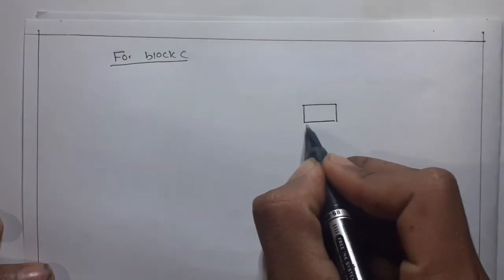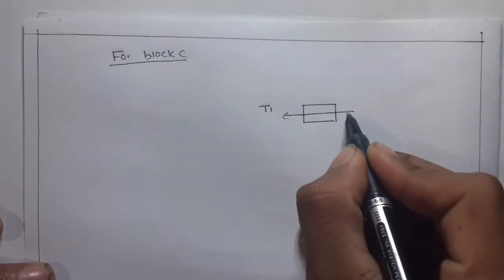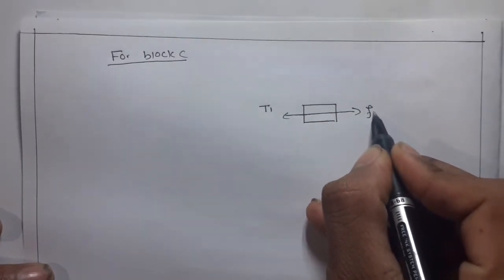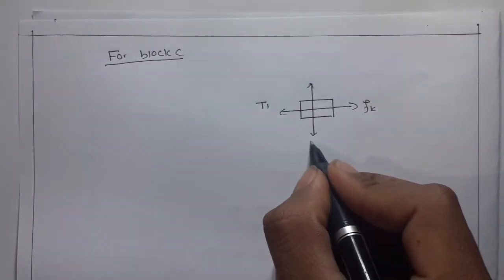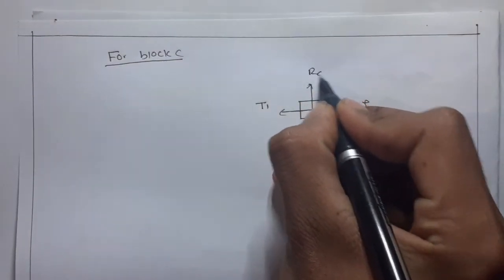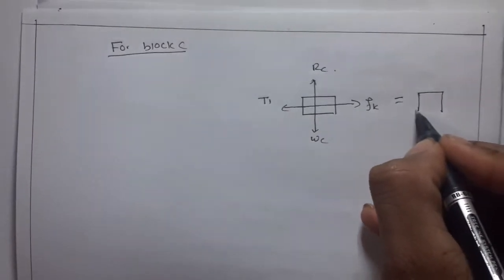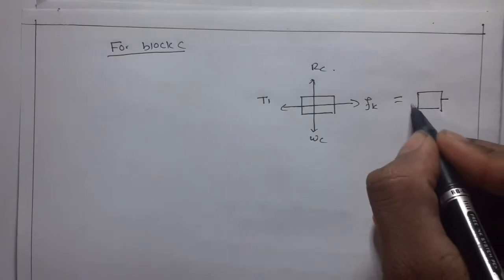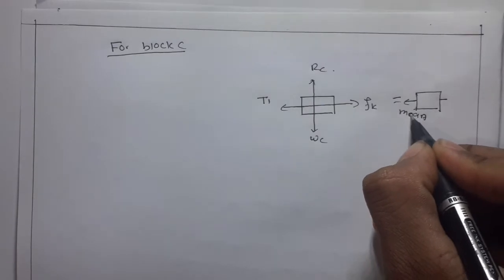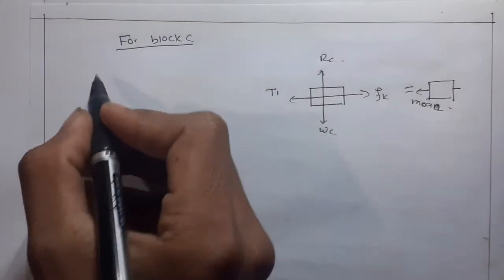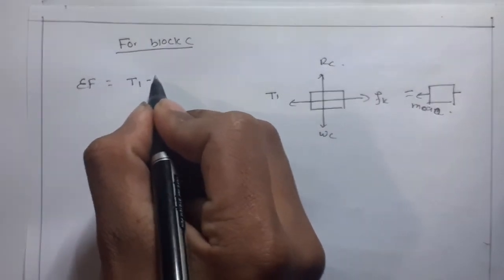For block C, the block moves from right to left. Tension T1 acts on one side, kinetic friction Fk acts on the opposite side, weight acts downward, and the normal reaction acts upward. The net force equation is: MC·AC = T1 − Fk.